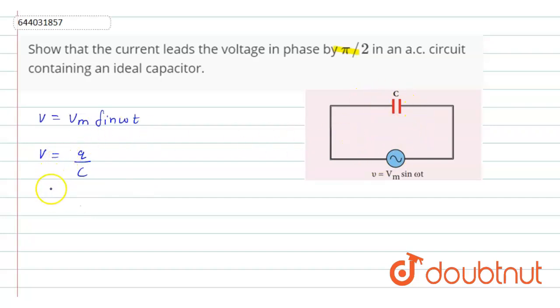From here what we get is q equals to C vm sin ωt.